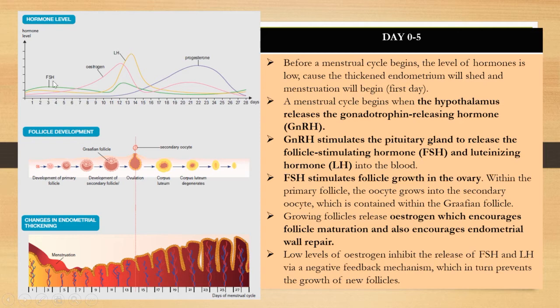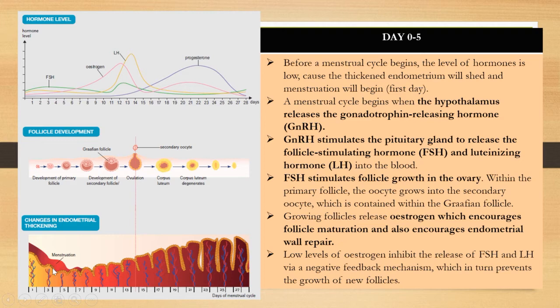Before a menstrual cycle begins, the level of hormones is low. This low hormone level causes the thickened endometrium to shed, and menstruation begins on the first day. On the graph of endometrial thickening, we can see the endometrial wall is shed here, and menstruation occurs.